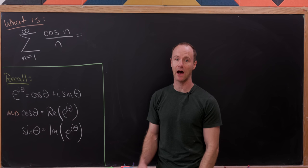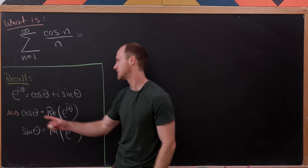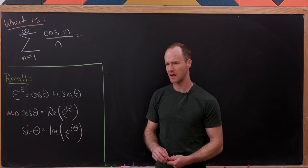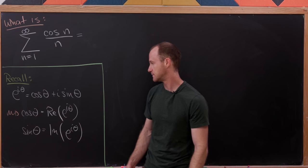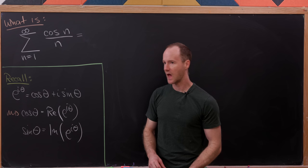We'll start by recalling Euler's famous formula for the complex exponential: e to the i theta equals cosine theta plus i sine theta. There's the real part function and the imaginary part function that extracts the real and imaginary parts. So cosine of theta can be rewritten as the real part of e to the i theta, whereas sine of theta is the imaginary part. That's going to allow us to rewrite this sum in terms of the complex exponential.